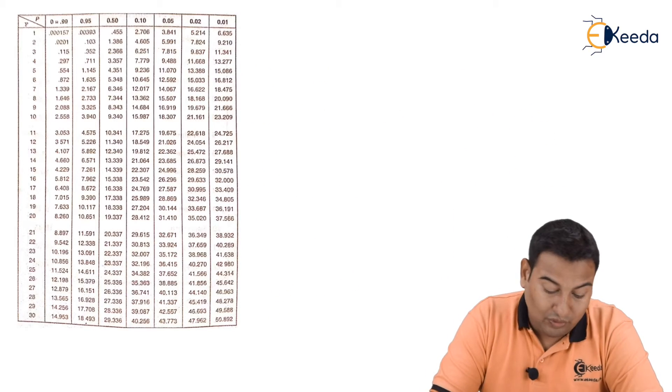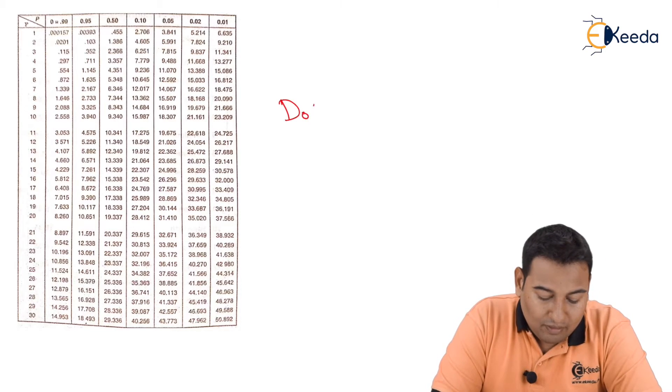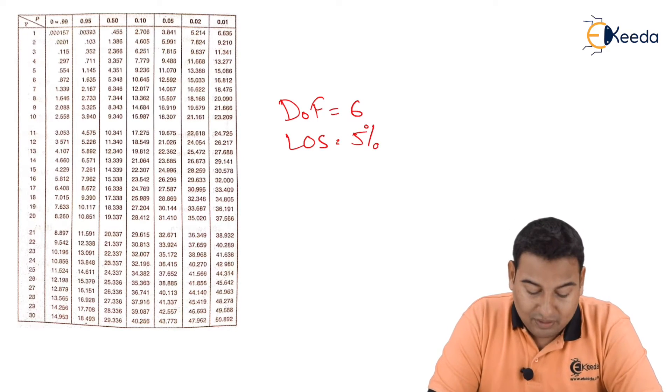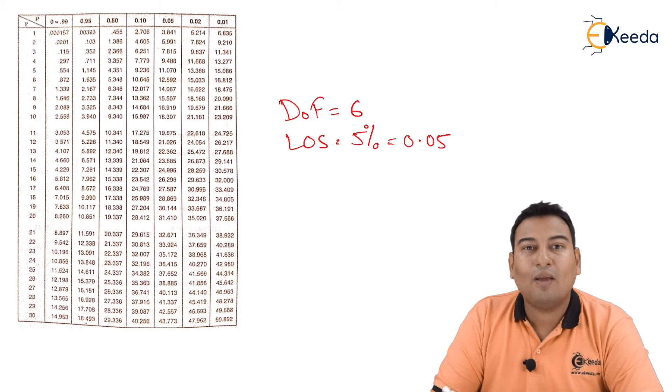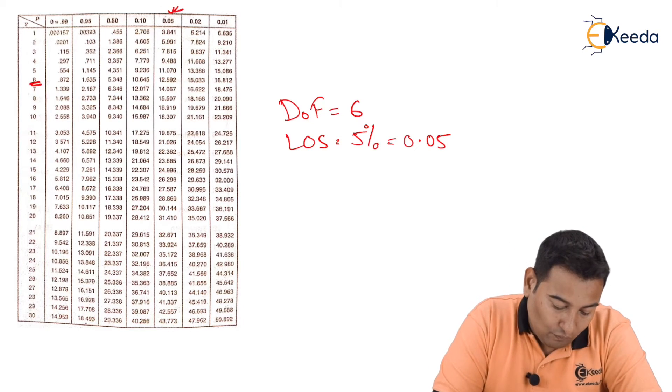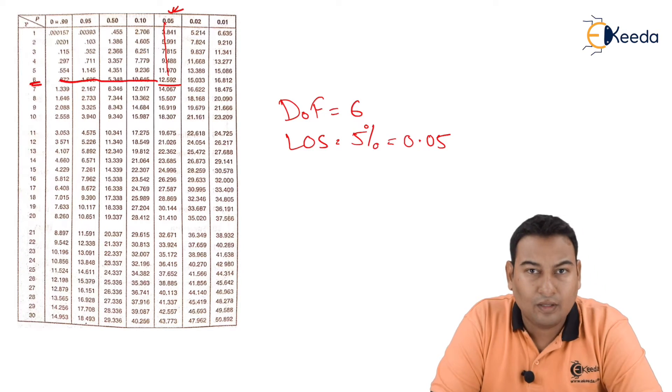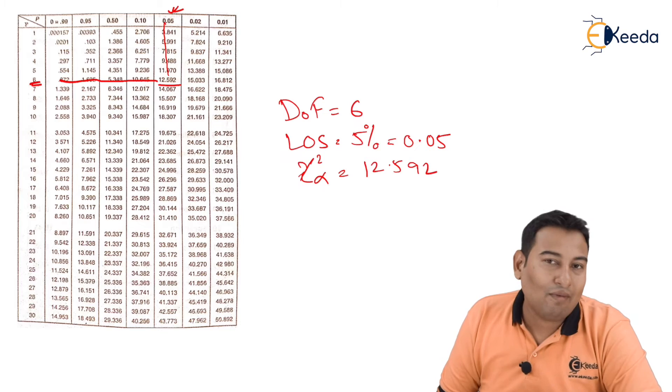One more thing: how to find the value of chi-square alpha. This is very important. Suppose let me assume degree of freedom is 6 and LOS is 5%. Five percent LOS means 0.05. So how am I going to check for 6 degree of freedom, 0.05? So this is the value. The value of chi-square alpha is 12.592.